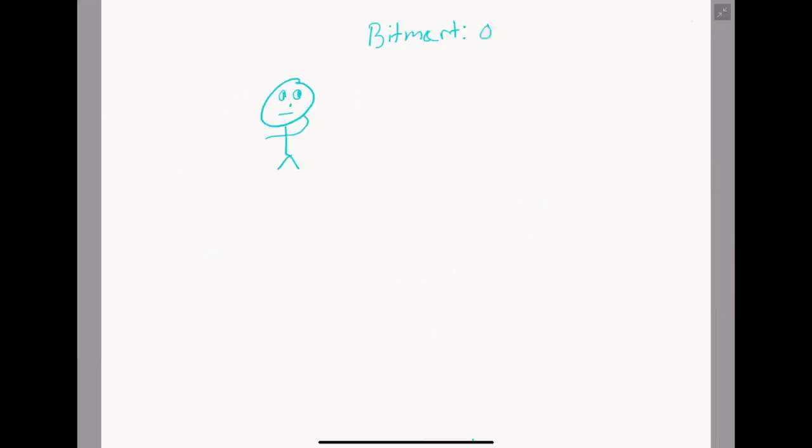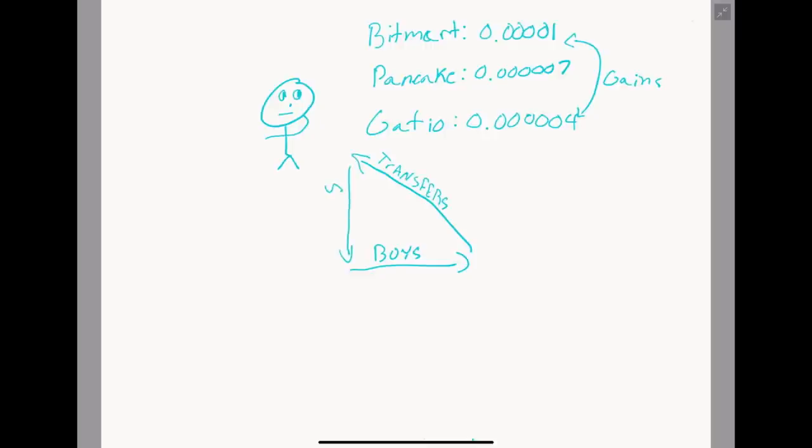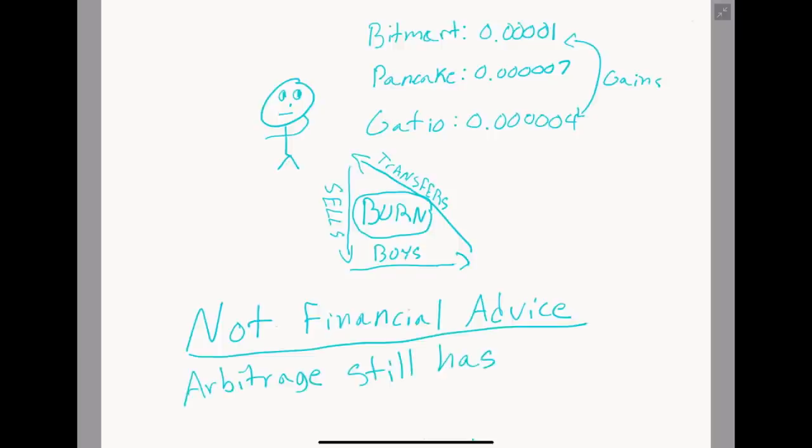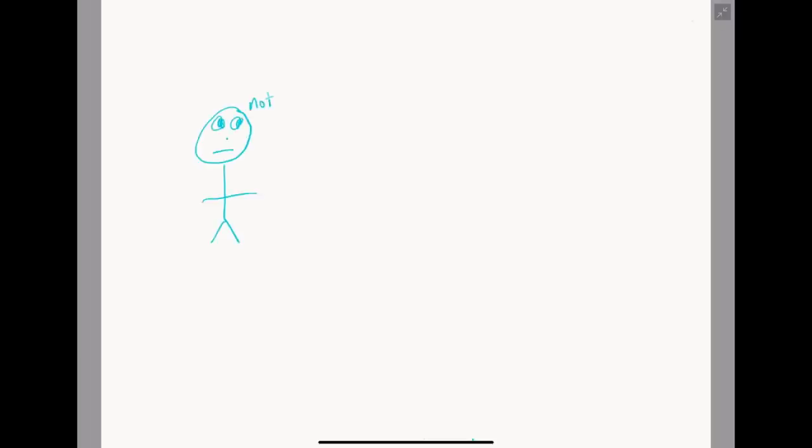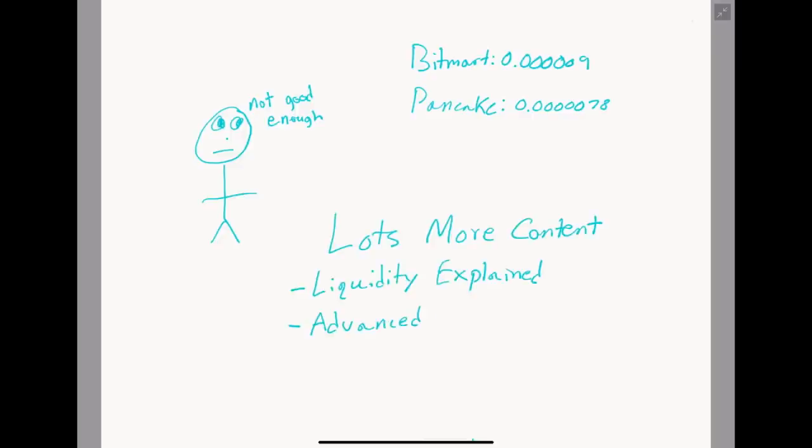I encourage experienced traders to look for these swings in price as they are fairly common. Arbitrage sounds like a nasty word, but it only would help SafeMoon in every way. Not only would exchange prices remain in balance, but the repeated buys, transfers, and sells would mean crazy reflections and crazy burns as well. It's a true win-win-win for the entire community. However, this is not financial advice, and arbitrage is risky in this case. I hope this helped clarify a lot of the questions you were having regarding the difference in price between exchanges.